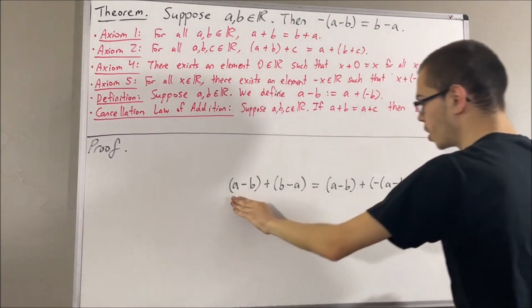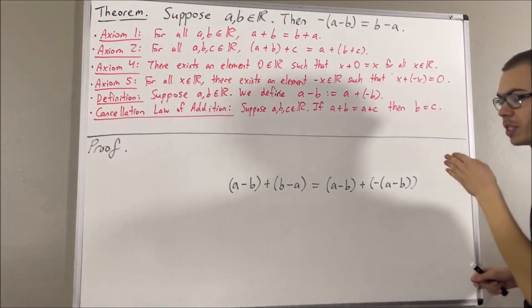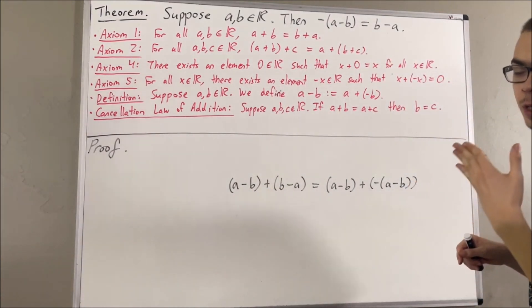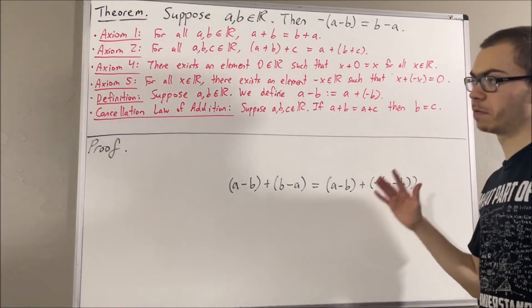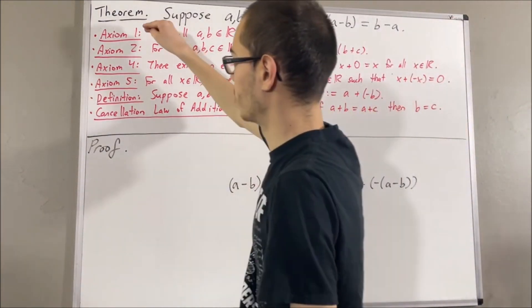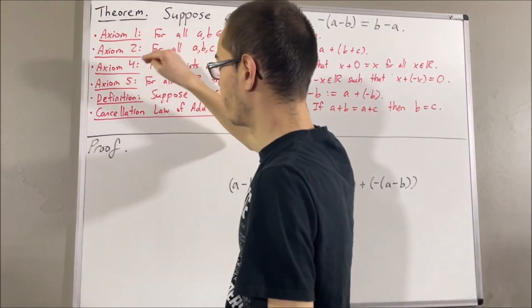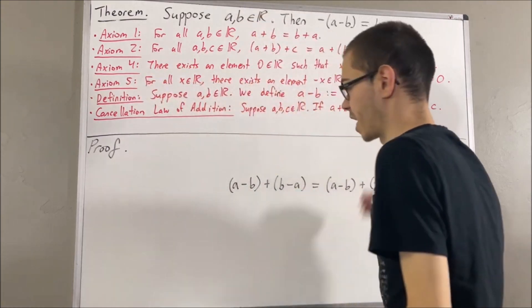To show that these two quantities are equal, we are going to establish a chain of equalities. And through that chain of equalities, we are going to be using axioms 1, 2, 4, and 5, and the definition of subtraction.